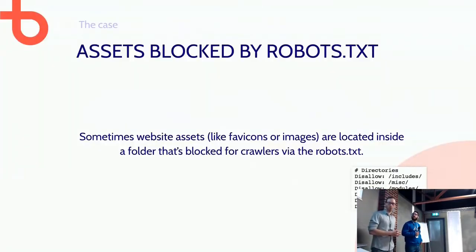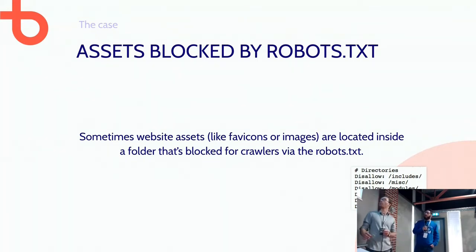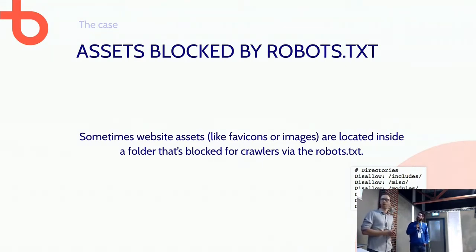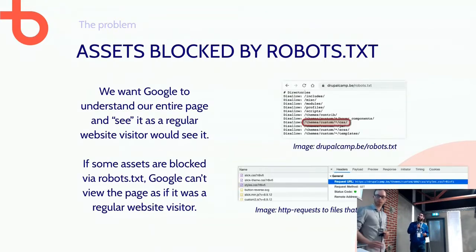Next, let's talk about assets being blocked by robots.txt. Sometimes assets actively used on your website — like favicons or logos in your header or footer — are located within a folder that is blocked in robots.txt. For example, you can see disallow directives for the profiles, scripts, and themes folders. The themes folder is where most favicons and similar assets are added.